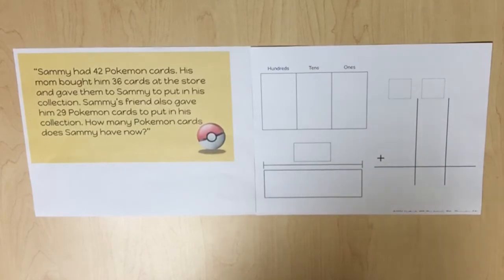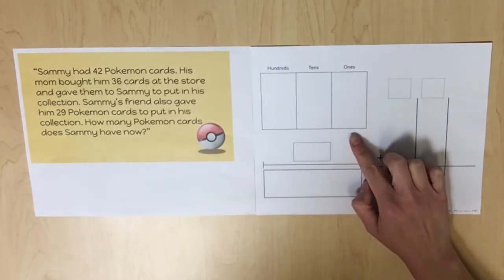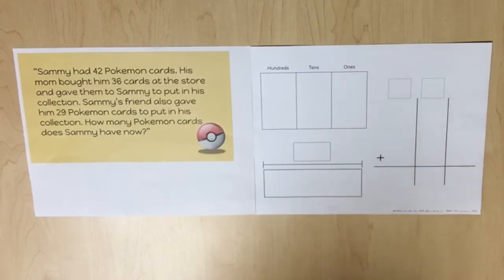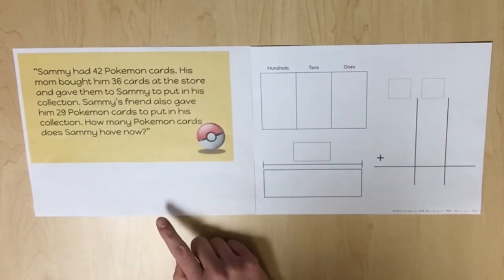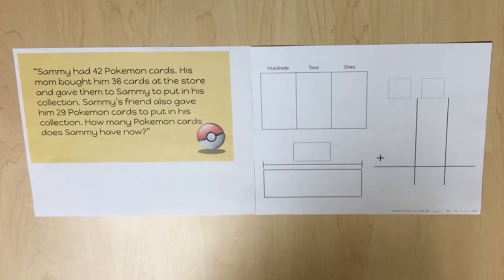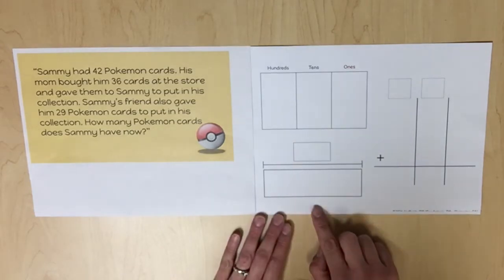Students are expected to add up to four two-digit numbers using the standard algorithm. To support students' understanding, a place value chart and pictorial representation will be used, along with a strip diagram to represent the knowns and unknowns. Let's look at this real-world scenario: Sammy had 42 Pokémon cards, his mom bought him 36 more, and his friend gave him 29 Pokémon cards. How many Pokémon cards does Sammy have now?